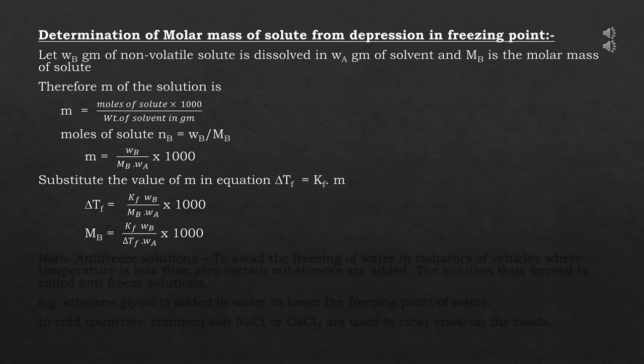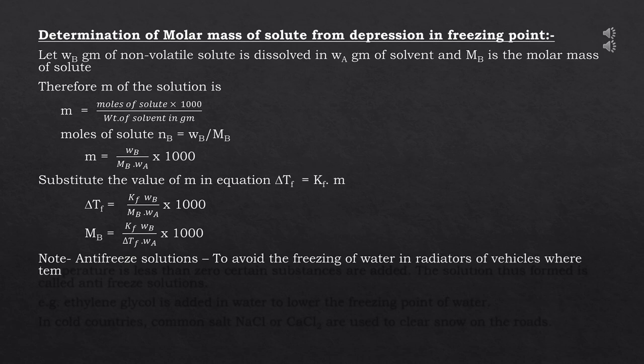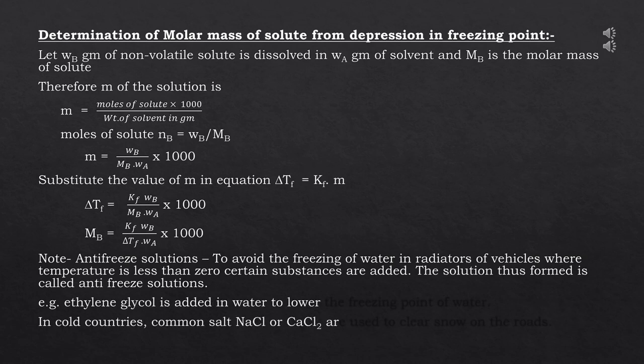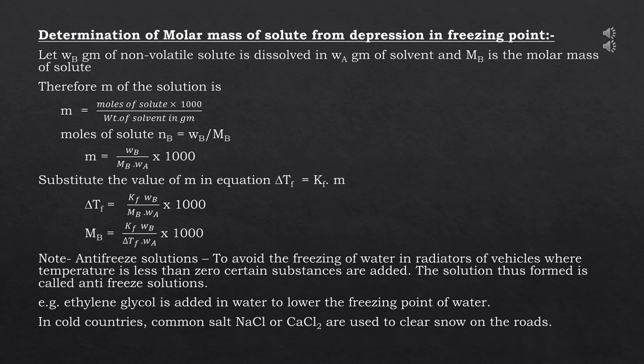Let's discuss anti-freeze solutions. Water is used in radiators of vehicles. To avoid freezing of water in radiators in areas where temperature falls below zero degrees Celsius, certain substances are added. Since adding a non-volatile solute decreases the freezing point, the solution formed is called an anti-freeze solution. For example, ethylene glycol is added to water to lower its freezing point. Common salt NaCl or calcium chloride are used to clear snow on roads by decreasing the freezing point of water.